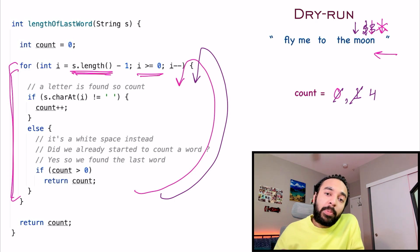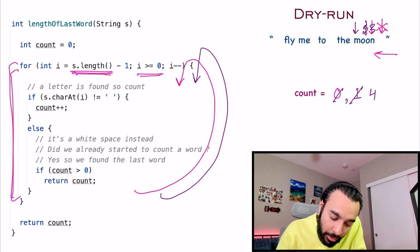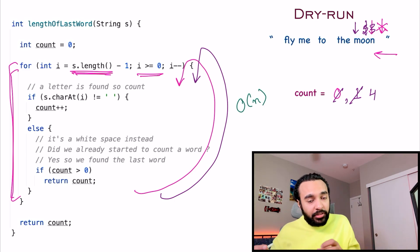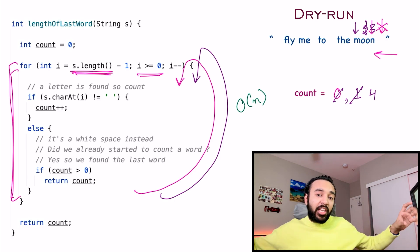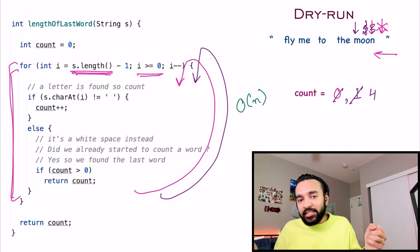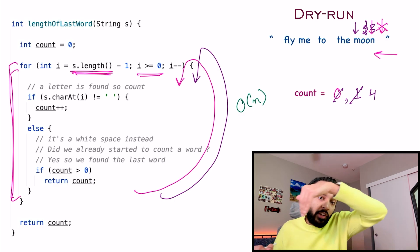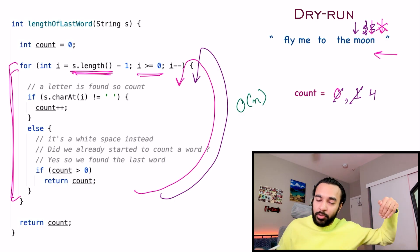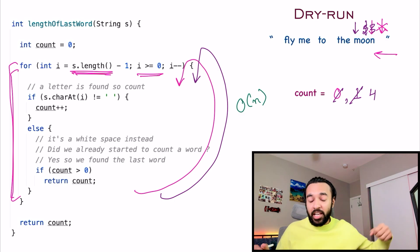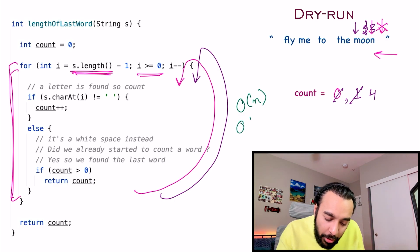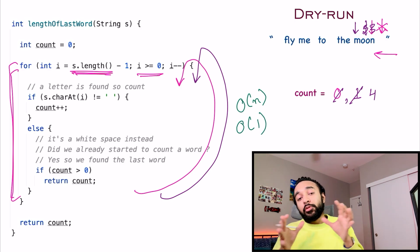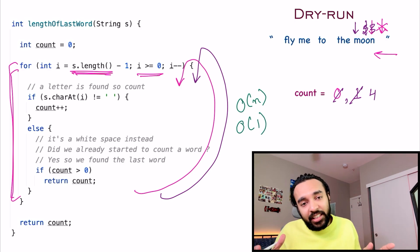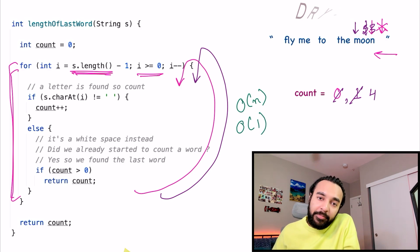The time complexity of this solution will be O(N), because in the worst case your entire string is just one word, so you will have to traverse through the entire string. The space complexity of this solution is O(1), because you do not take any extra space to arrive at your solution.